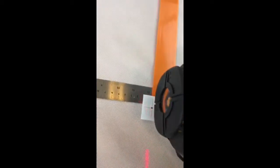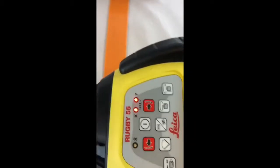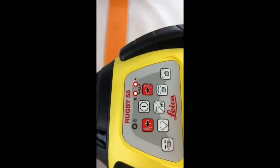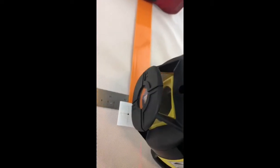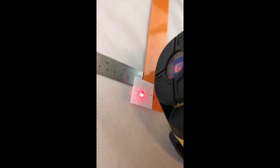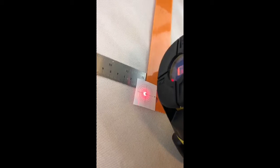We want to place the laser over the reference point, so we simply press this button here to stop the rotation. Now the laser beam will point straight down onto your reference point. You move the laser around until it's over your point.